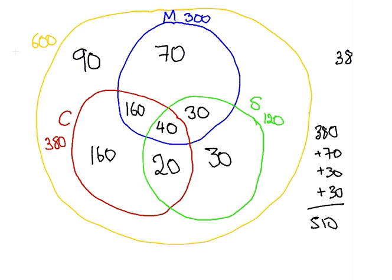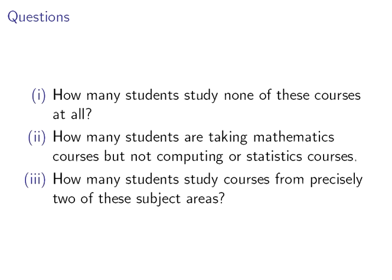So let's look at the questions now. How many students study none of these courses at all? We have found that to be 90 — 510 are studying at least one, so 90 are not studying any of those subjects. How many students are taking Mathematics courses but not Computing or Statistics courses? We have found that to be 70. And how many students are studying courses from precisely two subject areas?